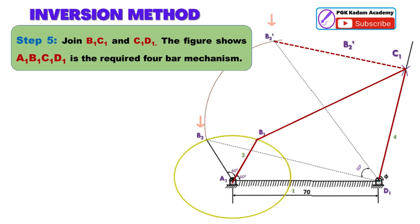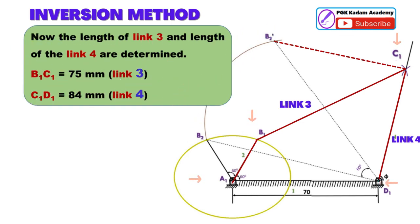The figure shows A1B1C1D1 is the required four-bar mechanism. Now the length of link 3 and length of link 4 are determined.